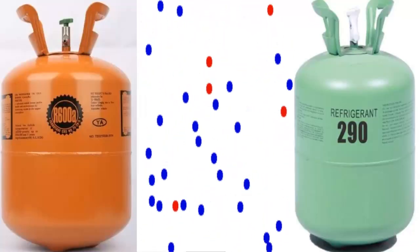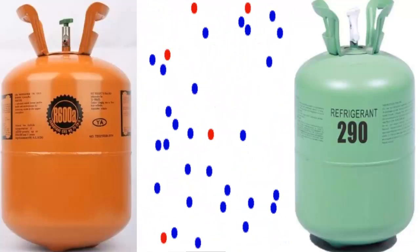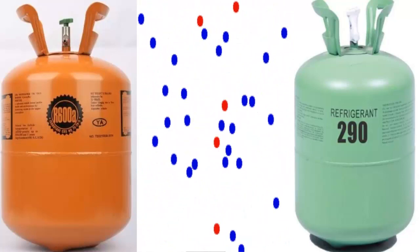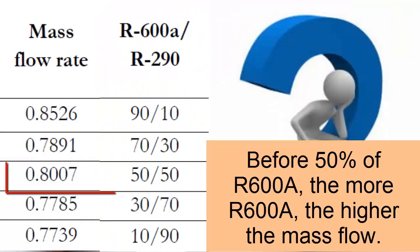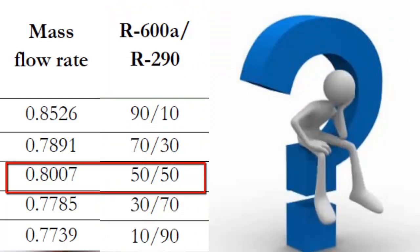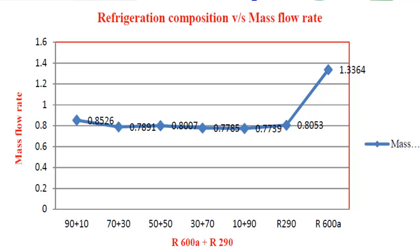Before the 50% proportion of R600A in the mixture, as the amount of R600A increases, the mass flow rate of refrigerant in the equipment increases, along with the need for other capillary tube measures. On the screen we have different mass flow rate values for some mixtures between R600A and R290.